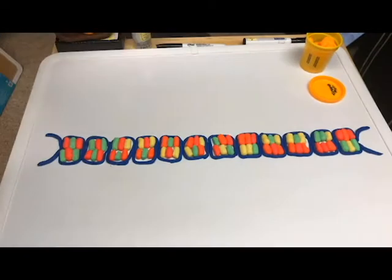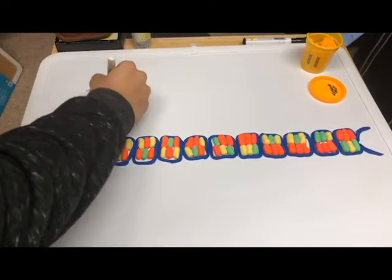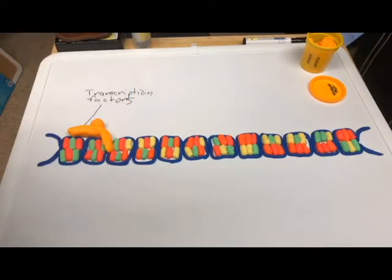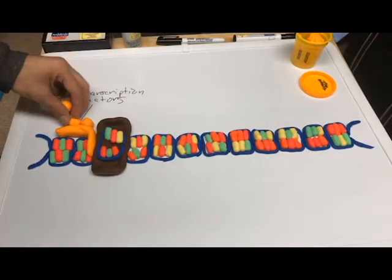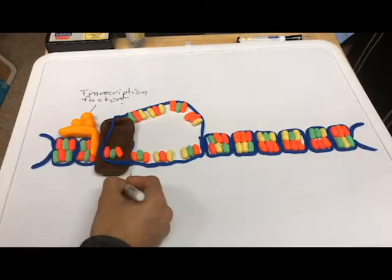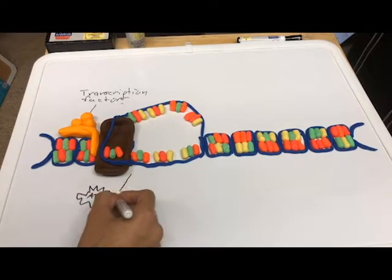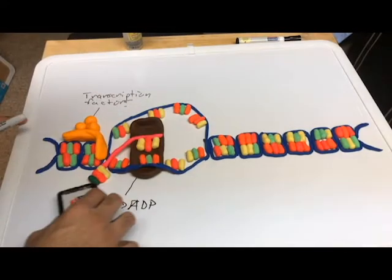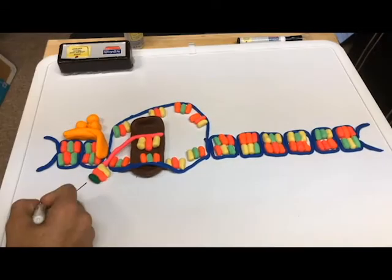Deoxyribonucleic — DNA is deoxyribonucleic, I said yeah. These nucleotide bases each sit on opposite strands. You can remember the pairs with the mnemonic G-CAT.